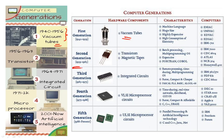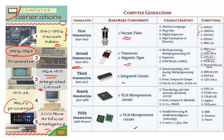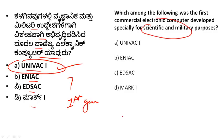Second generation computer used transistors and magnetic tape. Third generation used integrated circuits (IC). Fourth generation used microprocessors. Fifth generation uses artificial intelligence. Technology used: first generation - vacuum tubes, second - transistors, third - IC, fourth - VLSI/microprocessors, fifth - artificial intelligence.